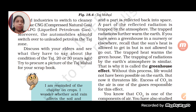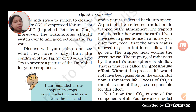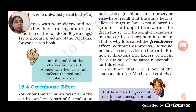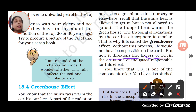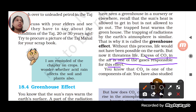A greenhouse is a kind of glass house that allows sunlight to come in but does not allow it to reflect back. Similarly, the greenhouse effect occurs when greenhouse gases prevent sunlight from reflecting back through the atmosphere. Without this process, life would not be possible on earth. But now it threatens life. Excess CO₂ in air is one of the gases responsible for this effect. CO₂ traps heat and helps maintain temperature, but if excess carbon dioxide is present in the atmosphere, it is not good for the environment and will trap more heat, not allowing it to escape — leading to an increase in temperature.